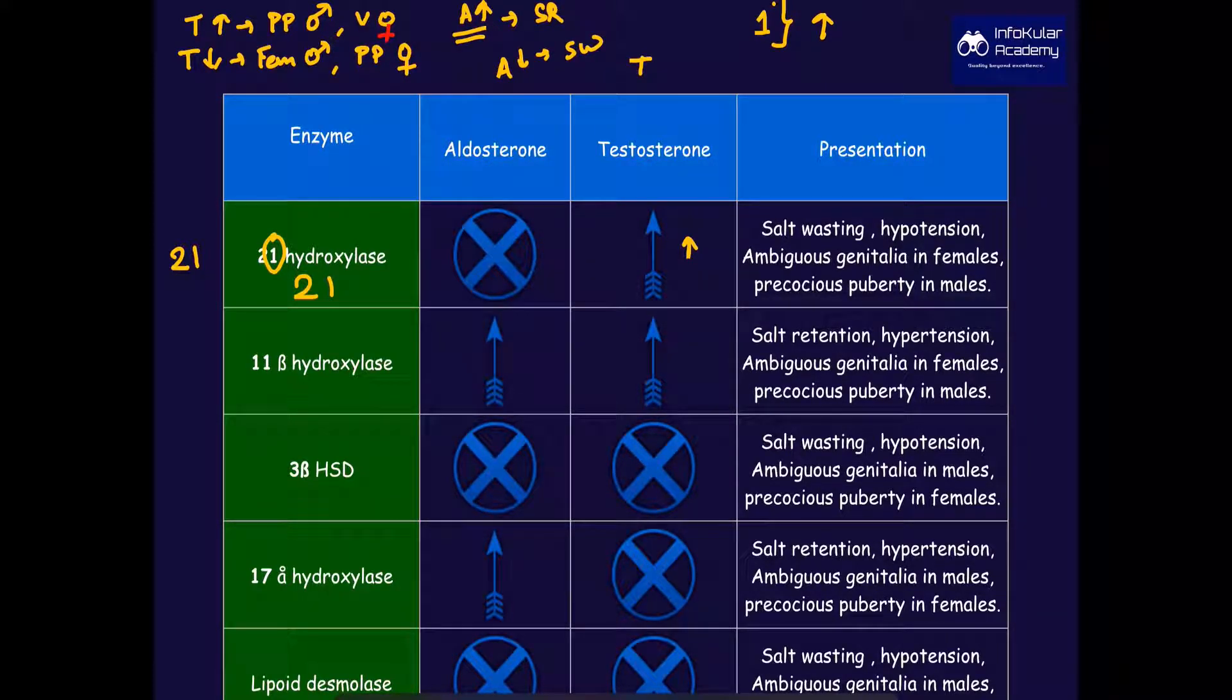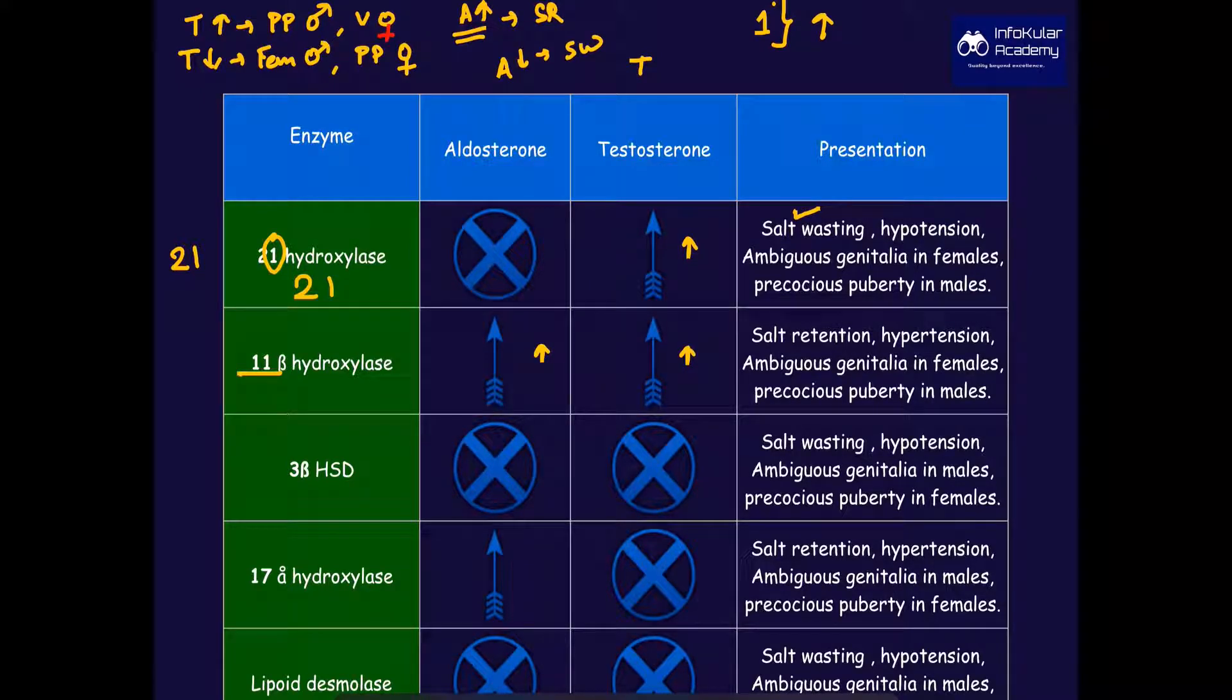Once you know this concept, it is very easy. 21-hydroxylase means there will be increased testosterone, and hence there is ambiguous genitalia in females and precocious puberty in males, plus salt wasting because aldosterone is decreased. 11-beta hydroxylase deficiency will show increased testosterone and aldosterone, and hence salt retention, hypertension, ambiguous genitalia in females, and precocious puberty in males.